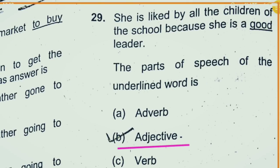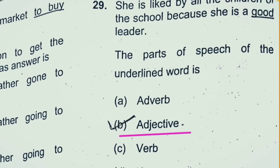Question 29: She is liked by all the children of the school because she is a good leader. Here in this sentence, 'good' is an adjective. What kind of leader? She is a good leader. So option B is the right answer — adjective. Good is an adjective.